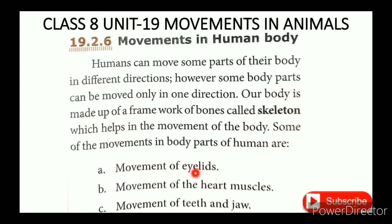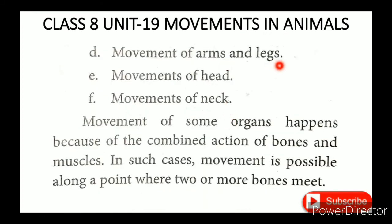Movement of eyelids, of the heart muscles, of the teeth and jaw, of the arms and legs — these are all movements of the human body. The movement of some organs happens because of the combined actions of bones and muscles. Movement is possible along a point where two or more bones meet. In such cases, the movement of two bones is jointed.